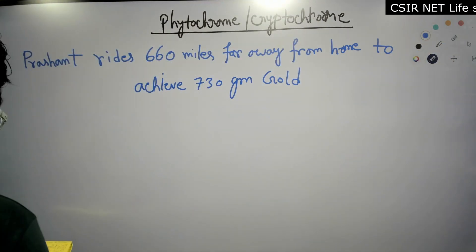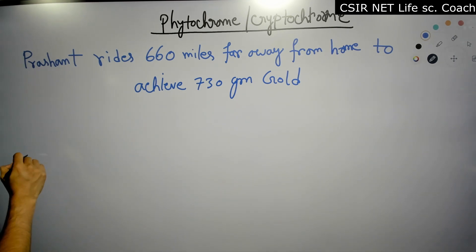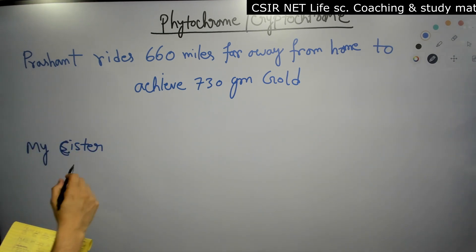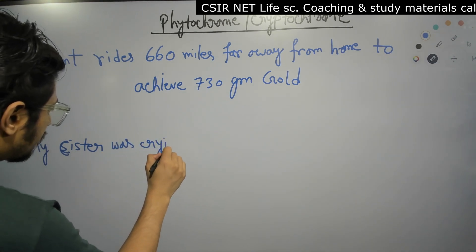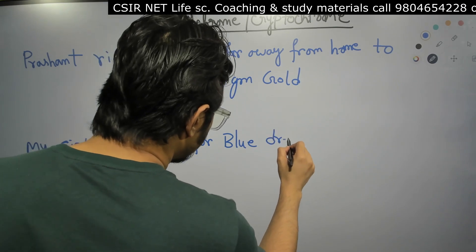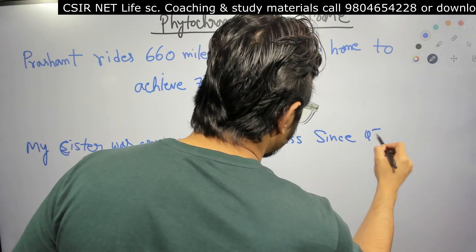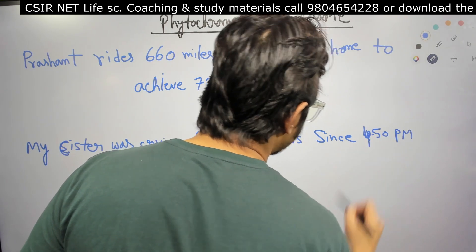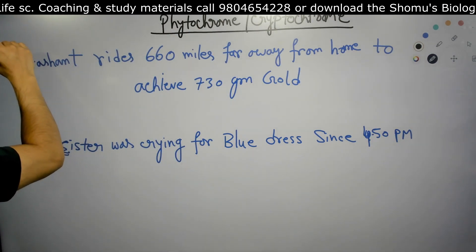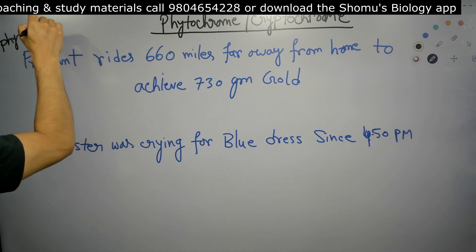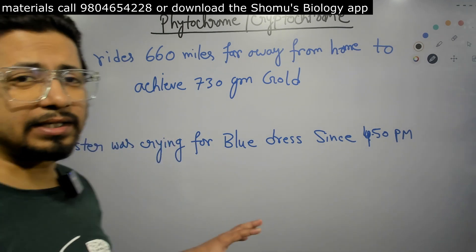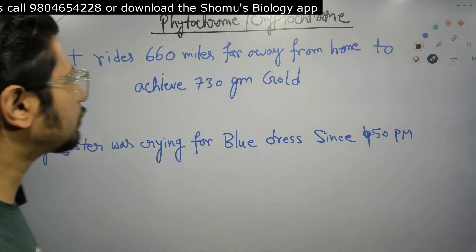Sentence number 2 is: My sister was crying for blue dress since 4:50 pm. I'll put CIS instead of sister here — there is a reason for that. My sister was crying for blue dress since 4:50 pm. So we have both sentences. The first sentence is for the phytochromes, and the second sentence is for cryptochromes. Both of them are catering to separate photoreceptors — phytochromes and cryptochromes.